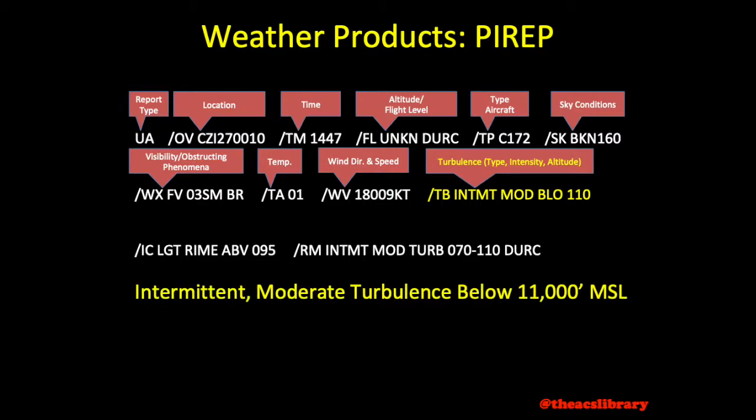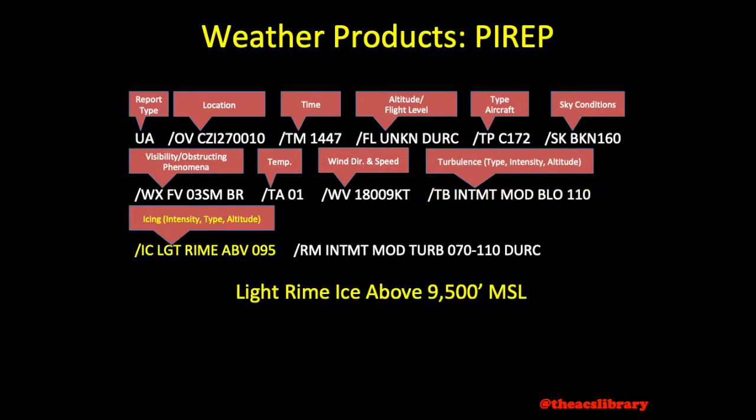In this case, we have moderate intermittent turbulence encountered below 11,000 feet MSL. Icing is reported similarly to turbulence, only with /IC rather than TB. In this case, light rime ice above 9,500 feet MSL.